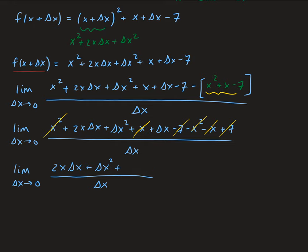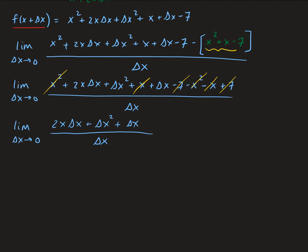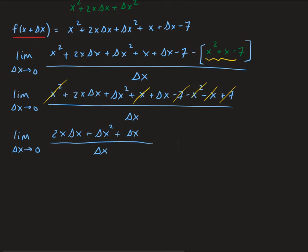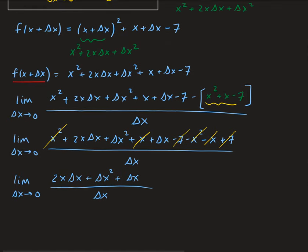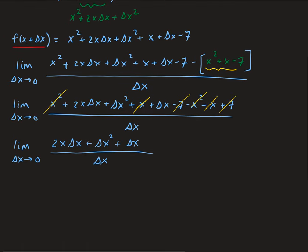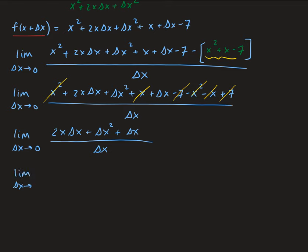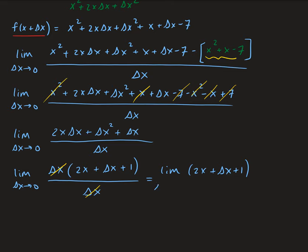Now we can factor out a delta x. By the way, if you can't factor out the delta x — if you can't cancel out the delta x value — then that means there was probably a mistake somewhere in the beginning. Usually when dealing with these types of problems, the delta x should cancel out with the one in the denominator. So factoring out delta x, we're left with 2x plus delta x plus 1, divided by delta x. As expected, delta x cancels out, giving us the limit of 2x plus delta x plus 1 as delta x approaches 0.